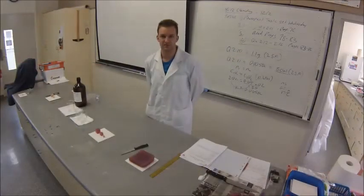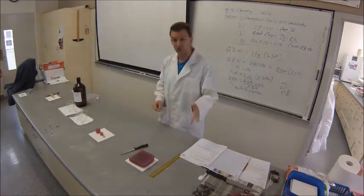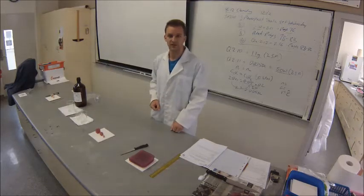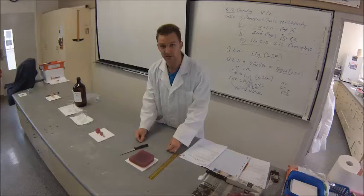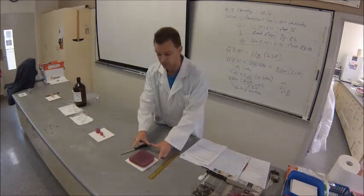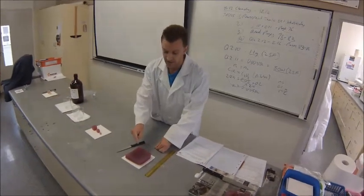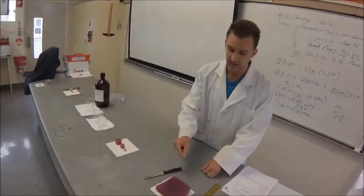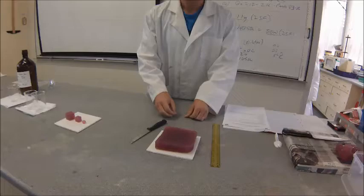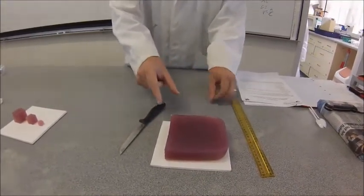Hi guys, I'm Lucas. Mr. Dugard introduced me before. What I'm going to do now is introduce each part of the practical and then go through each stage in more detail. The first thing you'll be doing is working with this — a type of jelly made from agar. Mixed into it is a base — sodium hydroxide — and a material called phenolphthalein, which is an indicator. When the base and phenolphthalein are mixed together, it goes pink.